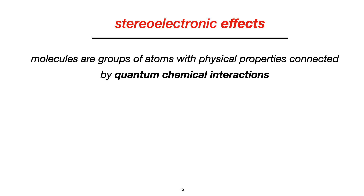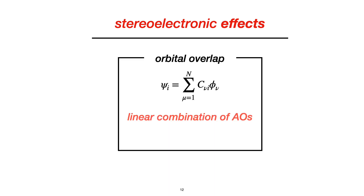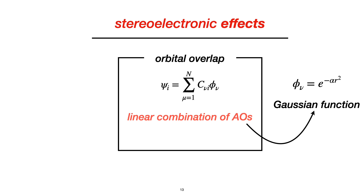We all should agree that molecules are groups of atoms with physical properties connected by quantum chemical interactions, and those interactions can be stabilized by exterior electronic effects. It consists of electronic effects maximized by the orbital overlap in a favored conformational arrangement. To talk about overlap, we need to recall that molecular orbitals are linear combinations of atomic orbitals, which can be represented as Gaussian functions, and the overlap is therefore the integral between the two atomic orbitals being combined in the molecular space, as presented in a diagram.